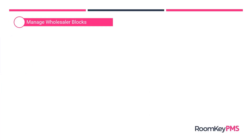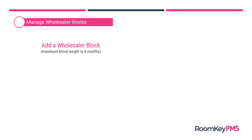The next thing we'll look at is how to manage wholesaler blocks. We've got a couple of steps here. First, we're going to add a wholesaler block. These block lengths are longer than a group block, which might be a few days — these block lengths are in months, and the maximum block length is six months in Roomkey. But you can create multiple wholesaler blocks end to end, so if you have a year contract, you would create two blocks, six months each.